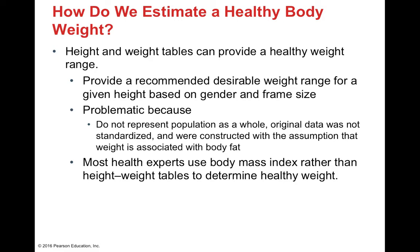We can also use height and weight tables to provide a healthy weight range based on recommendations from others in your size bracket — a desirable weight range for a given height based on gender and frame size. However, this can be problematic because it doesn't necessarily represent the entire population, and the original data was never standardized. The assumption is that weight is associated with body fat, which works for normal individuals but not for those whose weight reflects muscle mass, such as bodybuilders, who may appear overweight even though they are perfectly healthy.